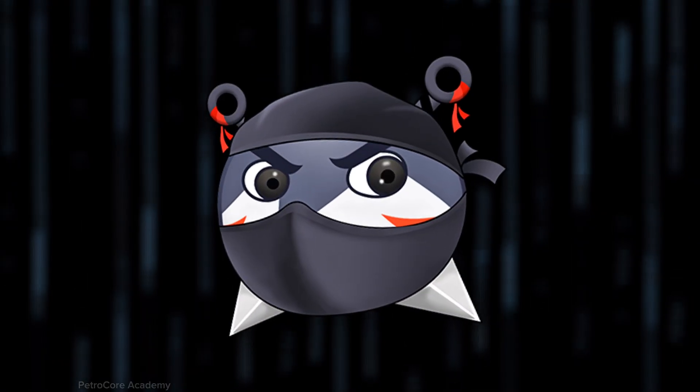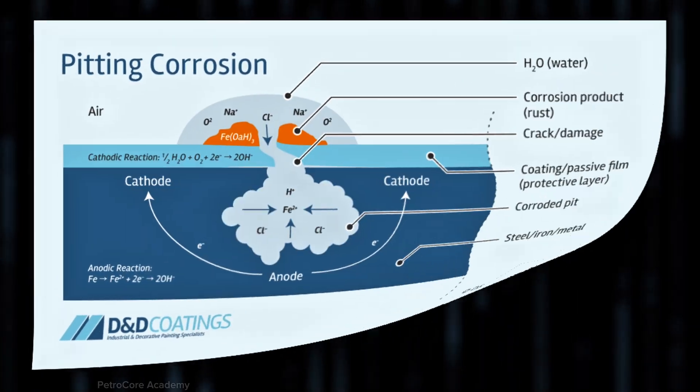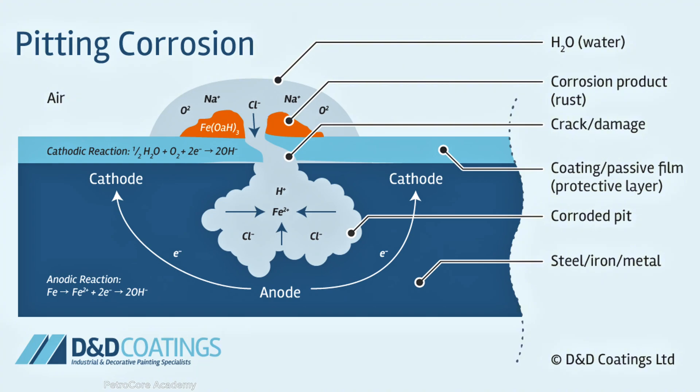Meet pitting corrosion, basically the ninja of the corrosion world. Small, sneaky, and surprisingly destructive. Pitting corrosion is a localized form of corrosion that creates small, deep holes or pits on a metal surface.